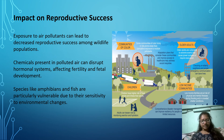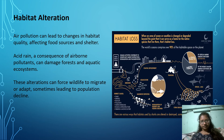Species like fish are particularly vulnerable due to their sensitivity to environmental changes. Vulnerable communities also include older adults, children, and low-income communities who face greater risk from air pollution exposure.